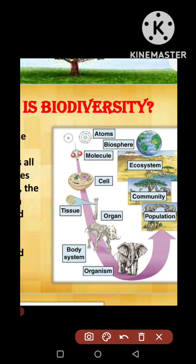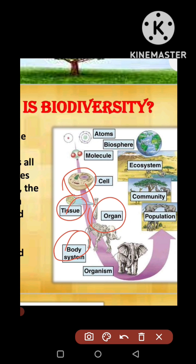You can see that a cell is there — it is the smallest life on earth. All living beings are made up of cells. From cells, tissue is formed, and from tissue, organs are formed. After that, different body systems are formed of different types of organisms.